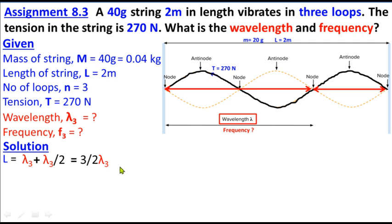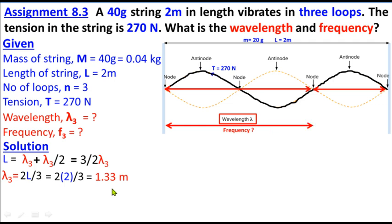From this, if we solve for lambda, it becomes 2L/3, or we can also write it as (2/3)L. Substituting values: lambda = 2 × 2 / 3 = 1.33 meters. So the wavelength is 1.33 meters, which also makes sense visually since the total string length is 2 meters.